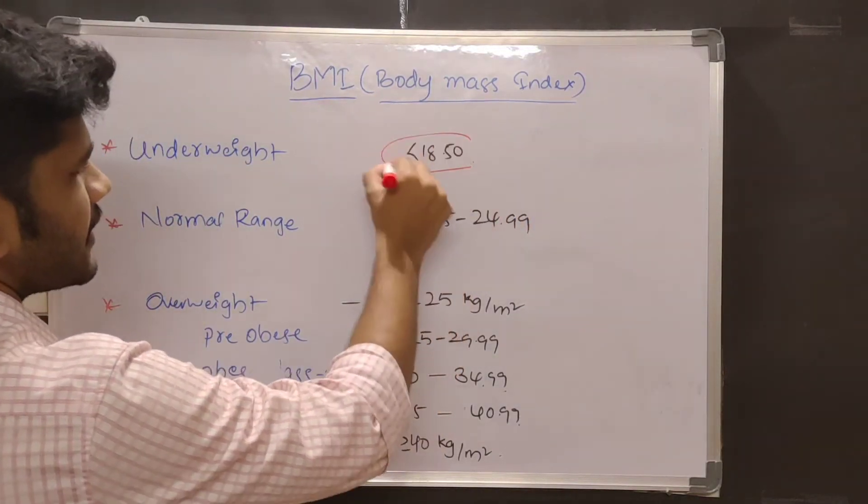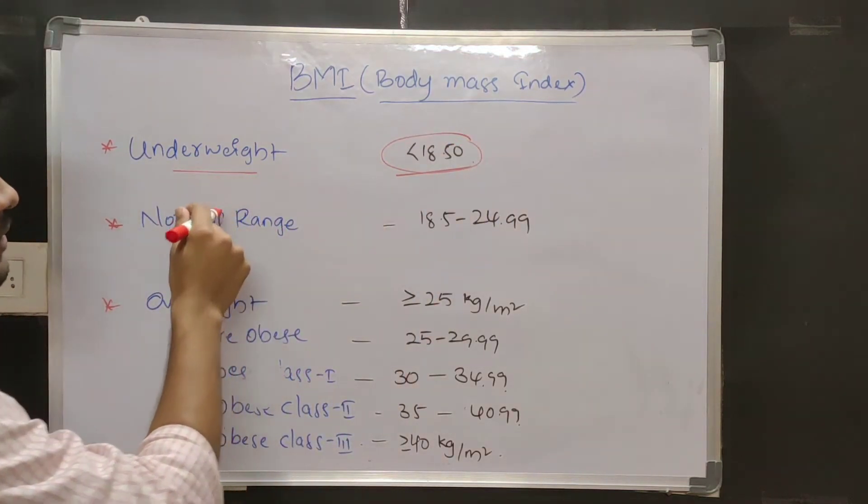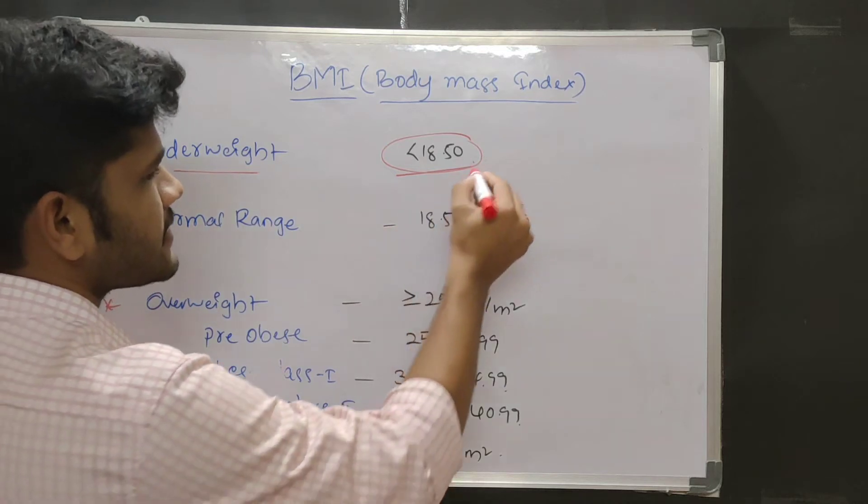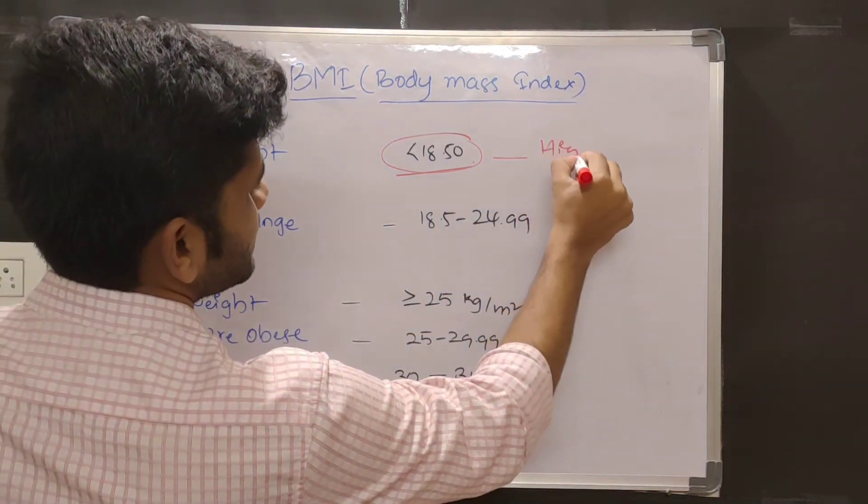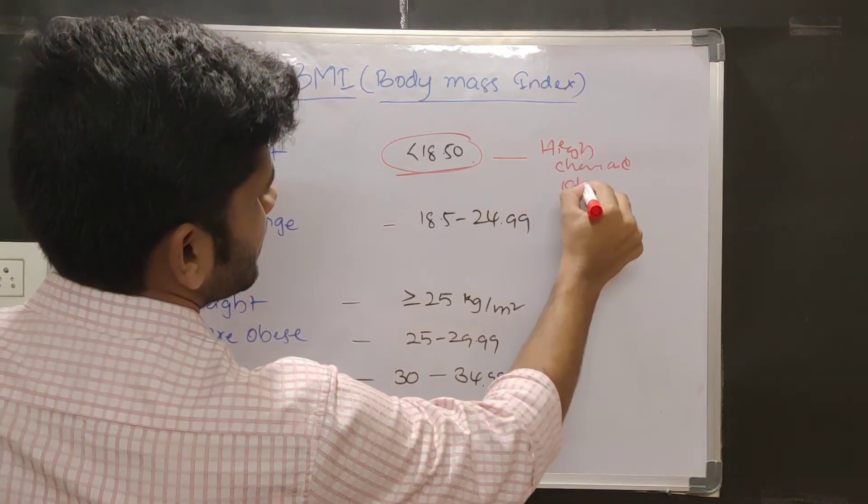People who have BMI of less than 18.5 are considered as underweight. These people have high chances of getting infection and also other metabolic disorders.